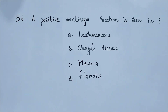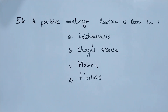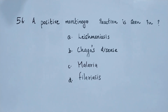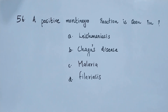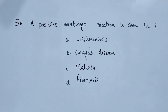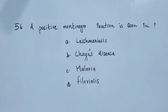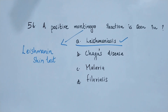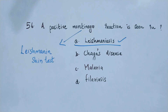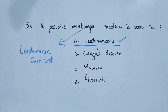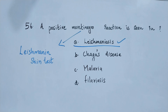Question 56. A positive Montenegro reaction is seen in: option A leishmaniasis, option B Chagas disease, option C malaria, option D filariasis. The right answer is option A, leishmaniasis. The Montenegro reaction is also called the leishmanin skin test, and it is positive in leishmaniasis.